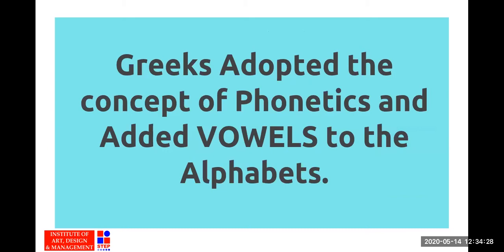The Greeks picked up the phonetics concept from Egyptian hieroglyphics and added vowels to it. Hieroglyphics were based on three things: phonetics — sound language; ideographic — pictorial language; and determinatives — which determined whether a word referred to a male or female entity. For example, if a male figure is made it determines it is male, if female it determines female.